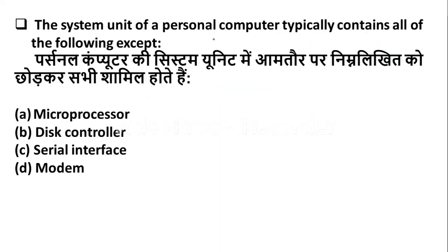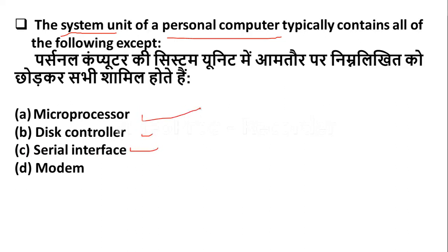The system unit of a personal computer typically contains all of the following except — the system unit contains a microprocessor, disk controller, and serial interface, but the system unit does not contain the modem. So the right answer is modem.